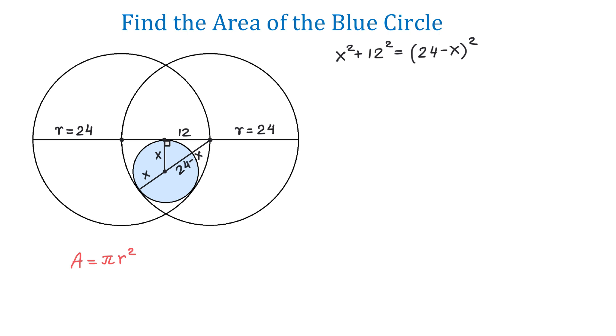If we solve this equation, then we will find the radius of the blue circle. On the left side, we will have x squared, then 12 squared is 144.